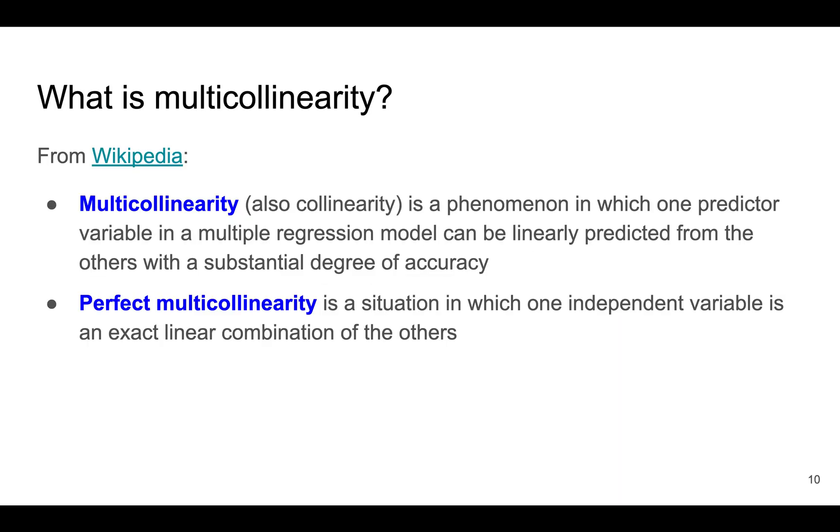Now let's return back to multicollinearity. I explained kind of informally what it is, and there's a formal definition here. Multicollinearity is a phenomenon in which one predictor variable can be linearly predicted from the others with a substantial degree of accuracy.